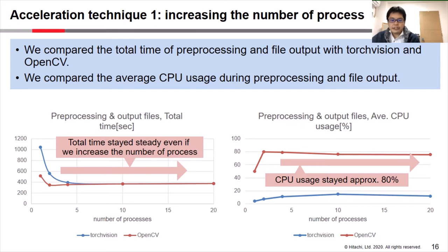Please look at the right figure. It indicates the average CPU usage, where the x-axis represents the number of processes. As you can see, CPU usage stayed at approximately 80% for OpenCV. That means we cannot make the most of CPU usage after adding file output.